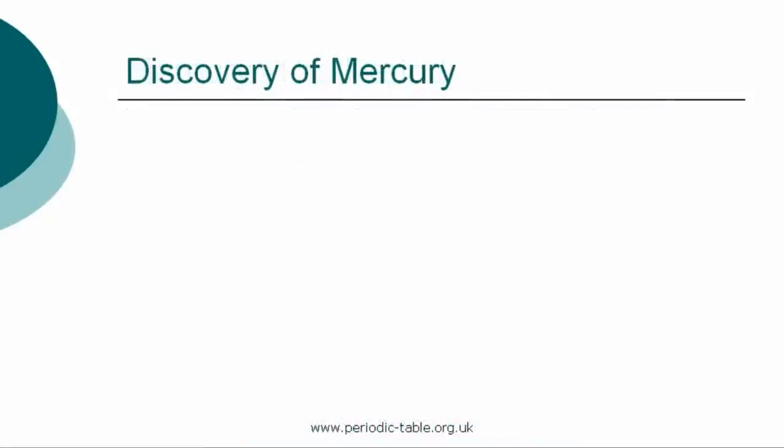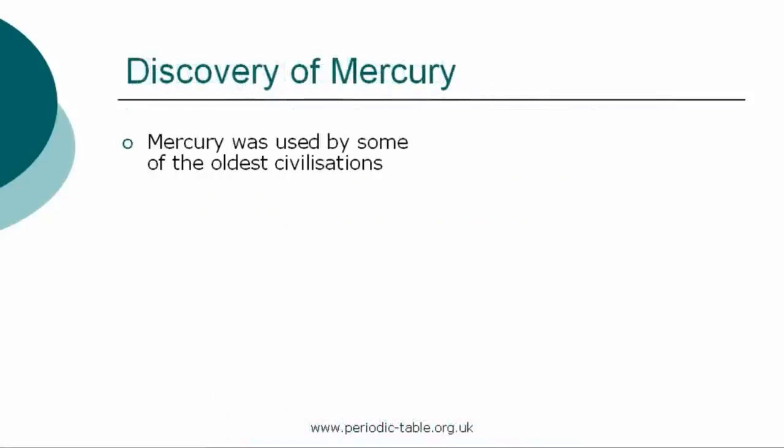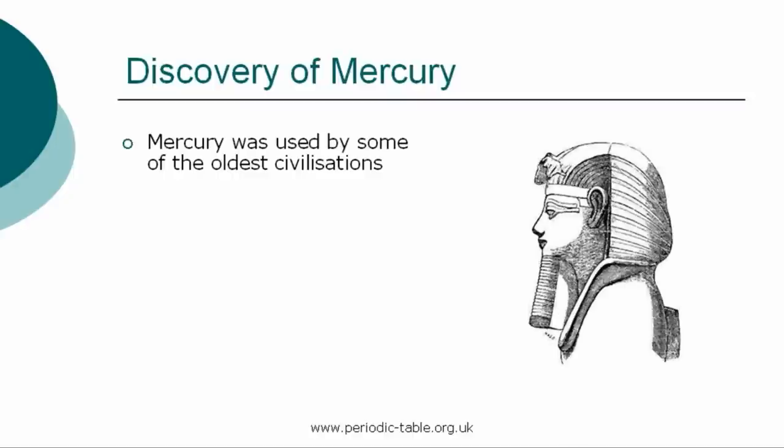Mercury was discovered around 1500 BC. Some metals, including mercury, were used by some of the oldest civilizations. Right up to the Middle Ages, people believed that only seven metals existed. These seven metals were iron, gold, silver, copper, lead, tin, and mercury, and are now referred to as the metals of antiquity.